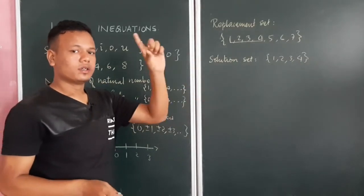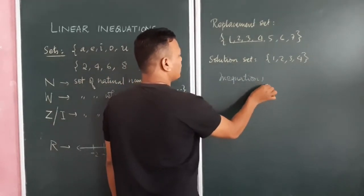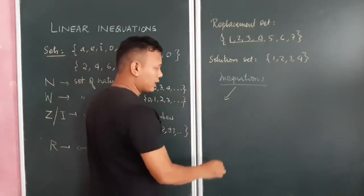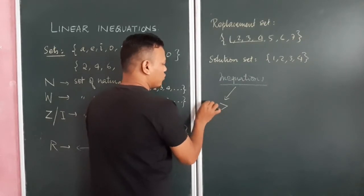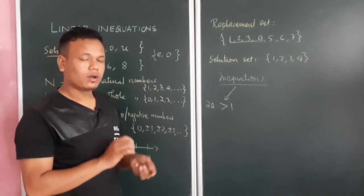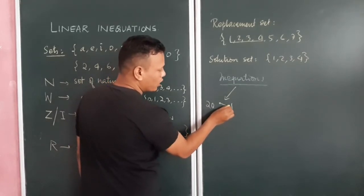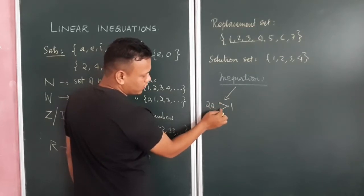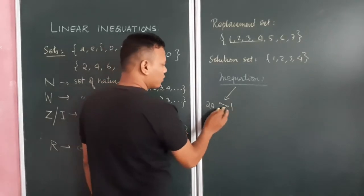Now let us go to the notations or symbols used in inequations. There are four kinds of symbols to remember. The first is greater than, represented by >. For example, 20 > 1 means 20 is greater than 1. A trick to remember: the side with two points is the greater side, and the single point side is smaller. So whatever you write on the two-point side is greater. The second is less than, represented by <. For example, 1 < 3 means one is less than three — one point on the left, two points on the right.